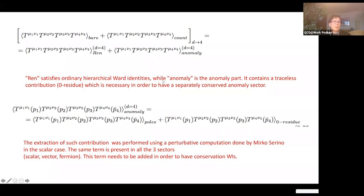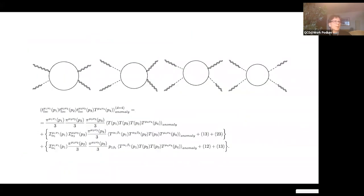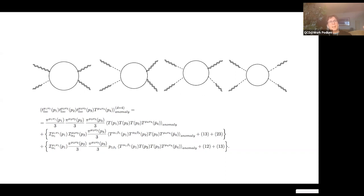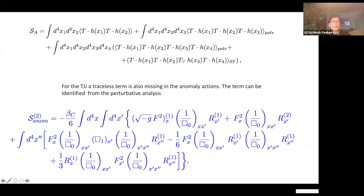The structure that emerges in the anomaly part is always the same: insertions of R/□ on external gravitational legs — one insertion, two insertions, three insertions — these are the traditional pieces appearing up to three-point functions. As you move to four-point functions, you encounter the zero-residue Weyl-invariant term that the effective action doesn't see. This term should be considered part of the anomaly, and it corresponds, at the level of the effective action in flat space, to something that needs to be further investigated.